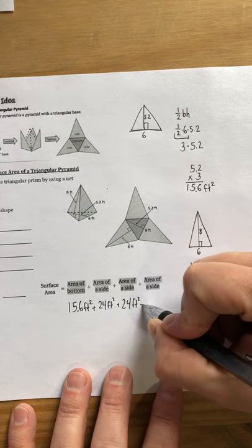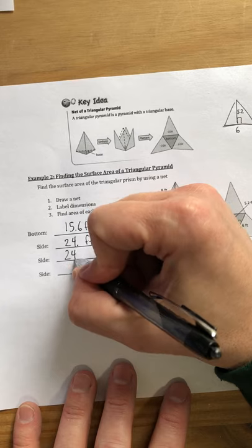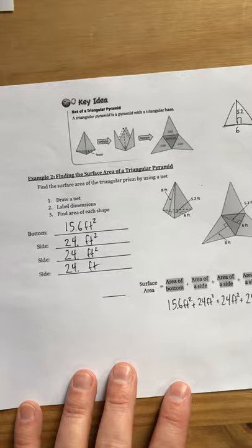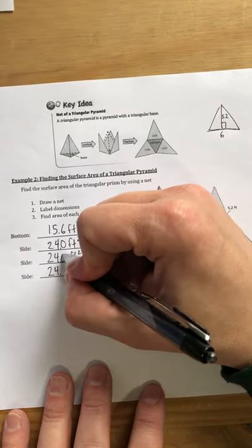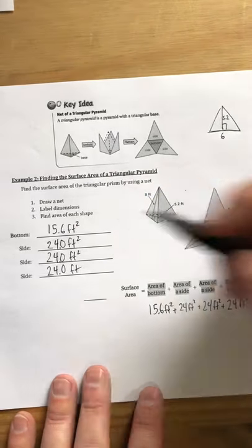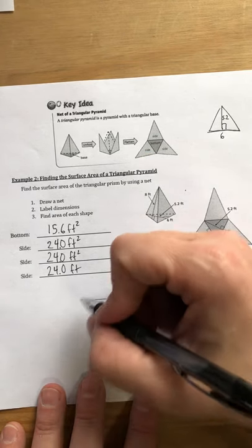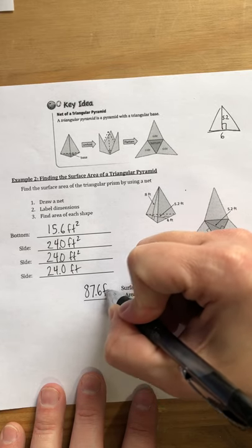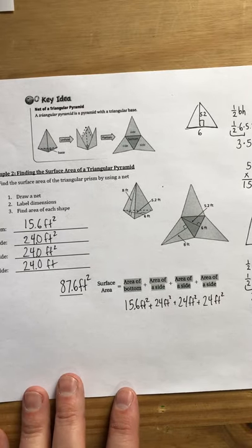And as I take the time to label these, you'll see that I lined up my decimal point when I made my column of numbers here. Sometimes students, when they go to add numbers that include decimals, they forget that whole numbers feature a decimal point as well. So I'm going to rewrite this as 24.0 feet so that it lines up with that decimal. And if I add this all up correctly, I'm going to get 87.6 feet squared as the surface area of this triangular pyramid.